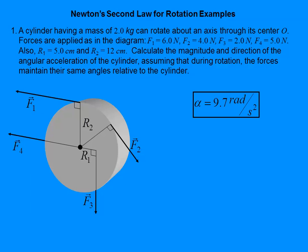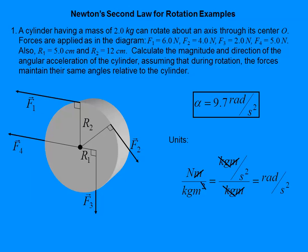You might ask where those units come from. Units are torque units over rotational inertia units: newton·meters over kilogram·meters squared. One meter cancels, and since a newton is a derived unit — kilogram·meter per second squared — the kilograms cancel and the remaining meter cancels. When you don't have anything left, you can put in radians, so it's radians per second squared. That is the angular acceleration of this cylinder with four different forces applied.